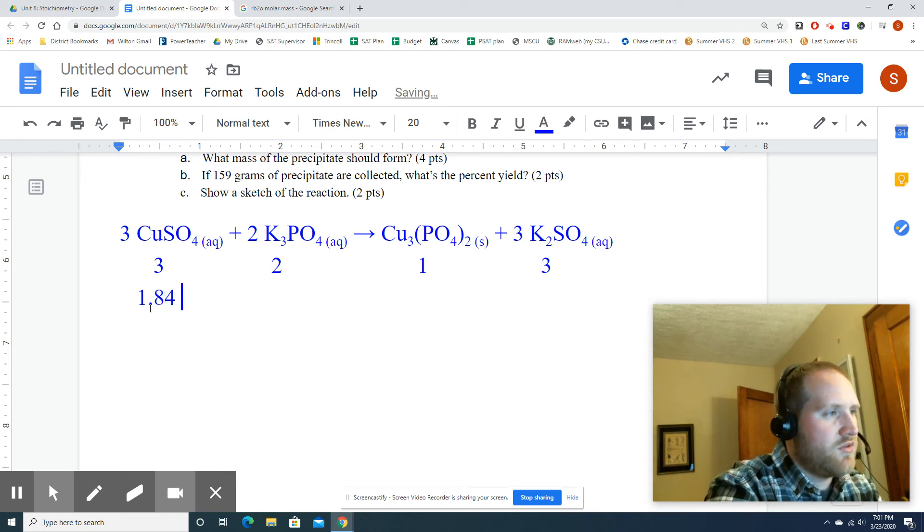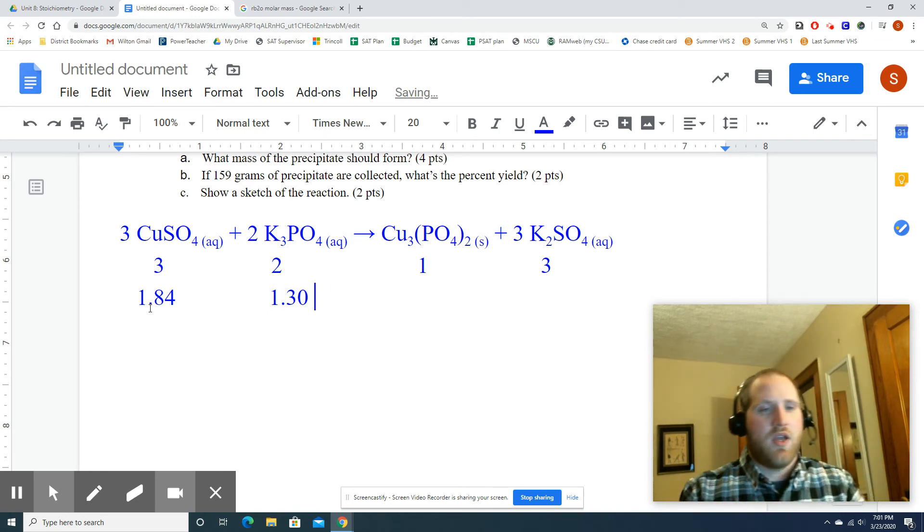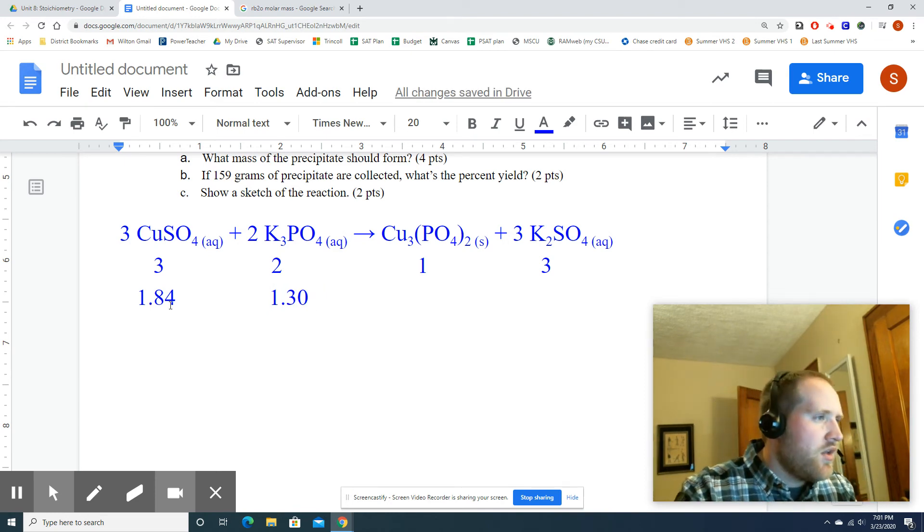I've already done the work on that. So I took this divided by the molar mass of CuSO4, and I divided this by the molar mass of K3PO4. So it's 1.84 and 1.30. Okay. Why don't you pause, figure out the LR, and then unpause.